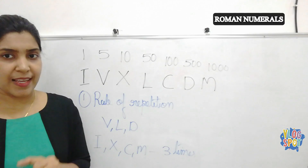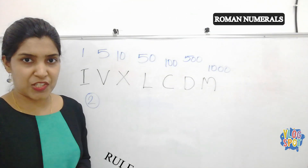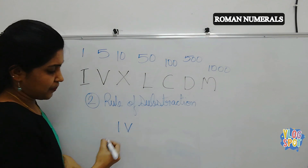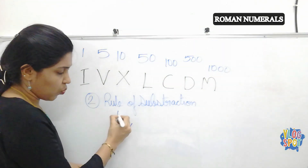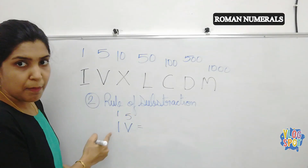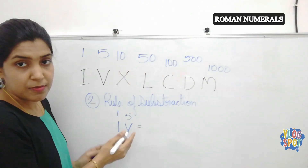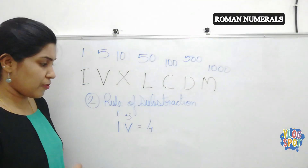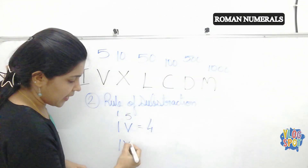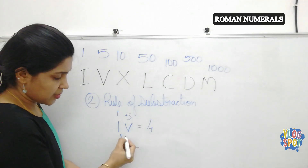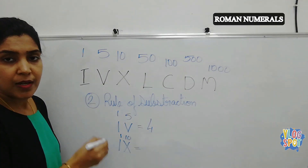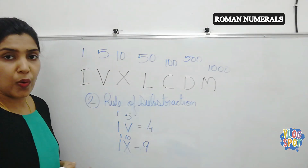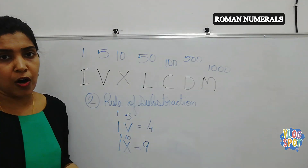The second rule is the rule of subtraction. If the first number is smaller than the second number, you subtract. For example, IV: I represents 1 and V represents 5. The first number is smaller than the second, so 5 minus 1 equals 4. The value of IV is 4. Another example: IX. I represents 1 and X represents 10, so 10 minus 1 equals 9. IX represents 9. This is the rule of subtraction.